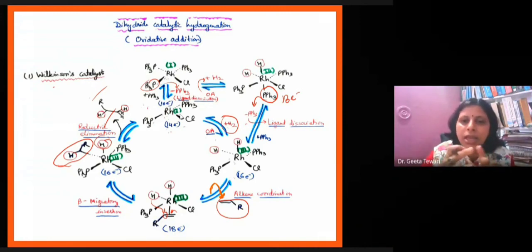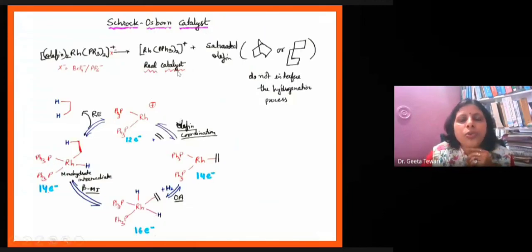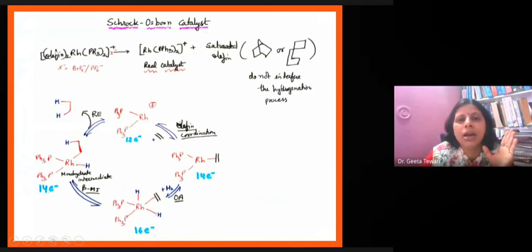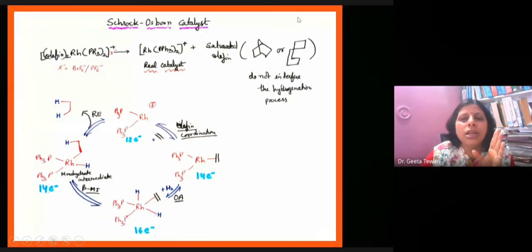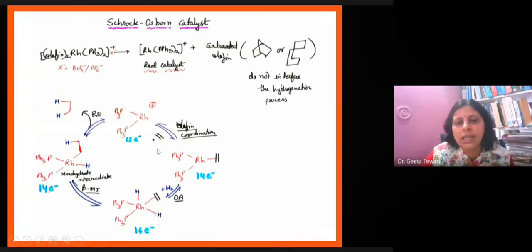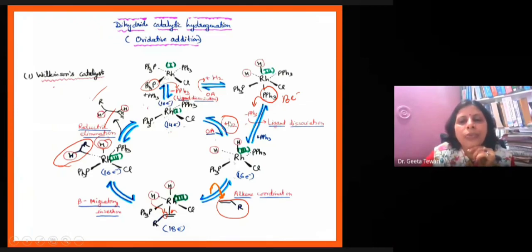The steps in the catalytic cycle of homogeneous catalysts are oxidative addition, reductive elimination, beta-migratory insertion, and elimination. I told you that in the Wilkinson catalyst the olefin is not the active ligand in the pre-catalyst — the COD or diene ligand is removed to give the real active catalyst. The Wilkinson catalyst follows this cyclic process for hydrogenation.